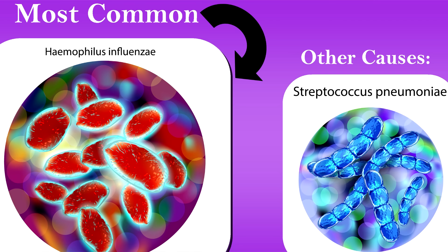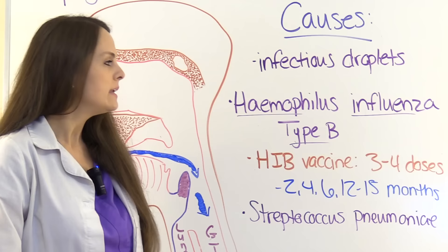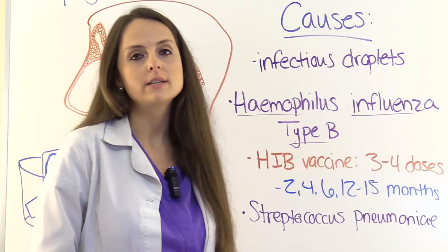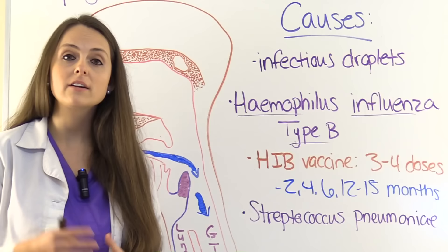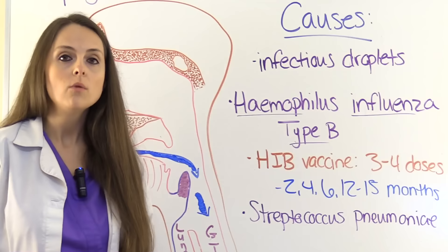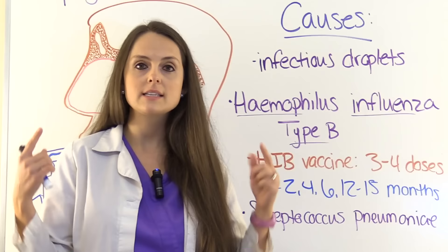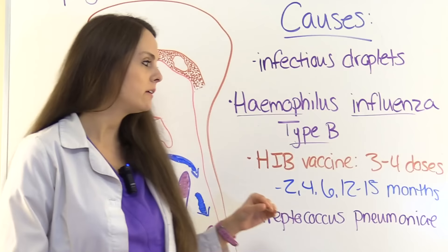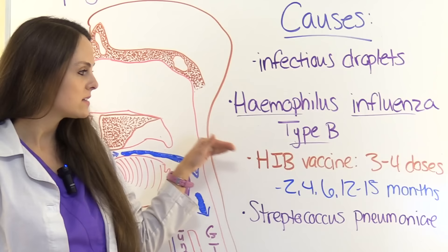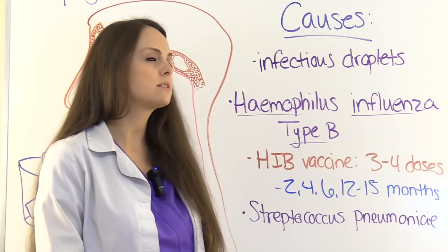It can also be caused by other bacteria such as Streptococcus pneumoniae. Regarding Haemophilus influenzae type B, there is a vaccine available for children to help prevent this condition, which is why over the years we have seen a decrease in children developing epiglottitis. As a nurse, be familiar with this vaccine — it is called the Hib vaccine, and the child needs about three to four doses depending on the brand.